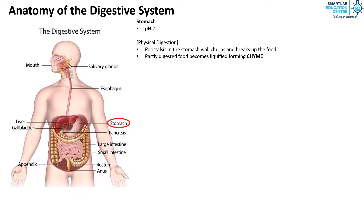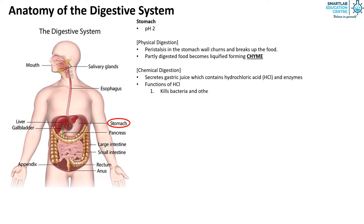The chemical digestion that occurs is as follows: the stomach secretes gastric juice, which contains hydrochloric acid (HCl) and enzymes. The function of HCl is that it kills bacteria and other foreign particles, it provides an acidic pH for the action of gastric enzymes, and it stops the action of enzymes from the mouth.